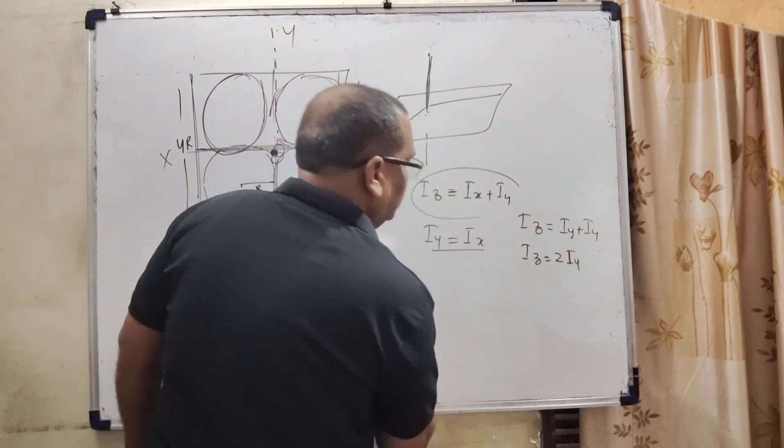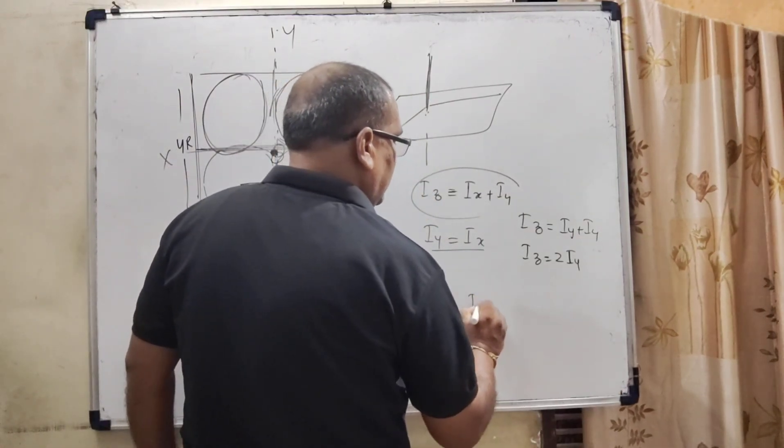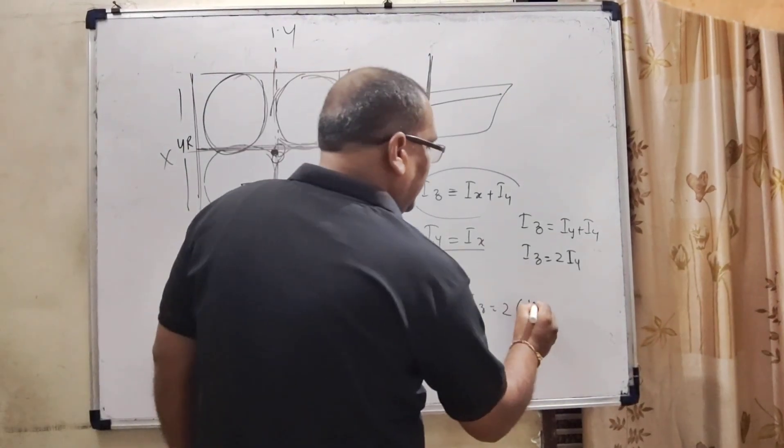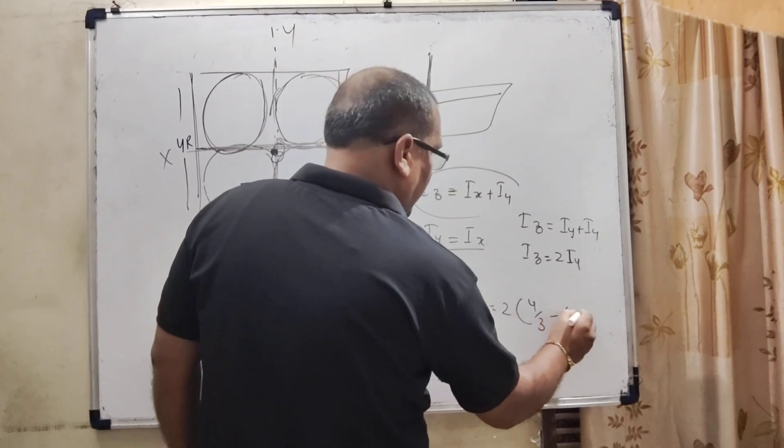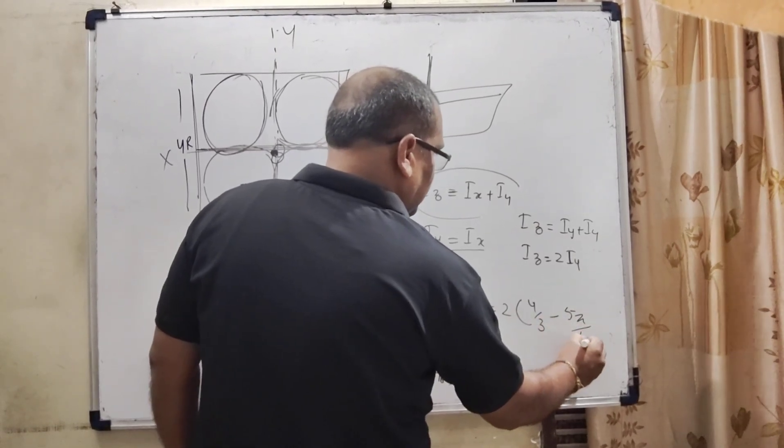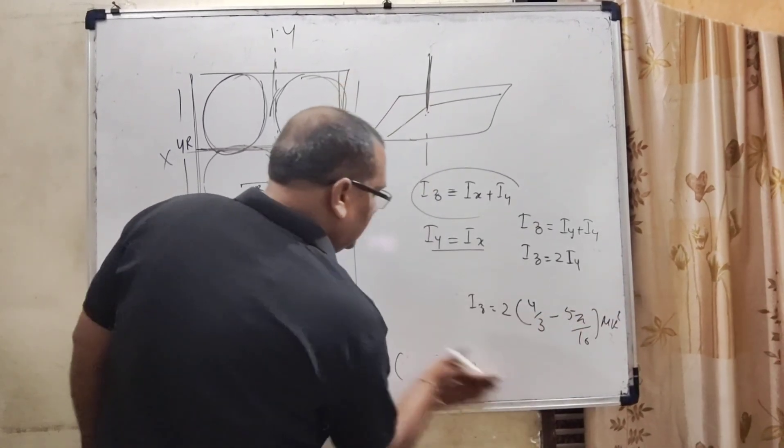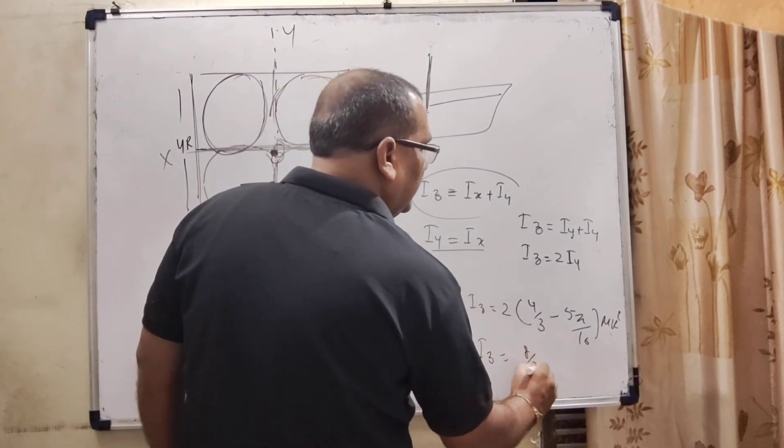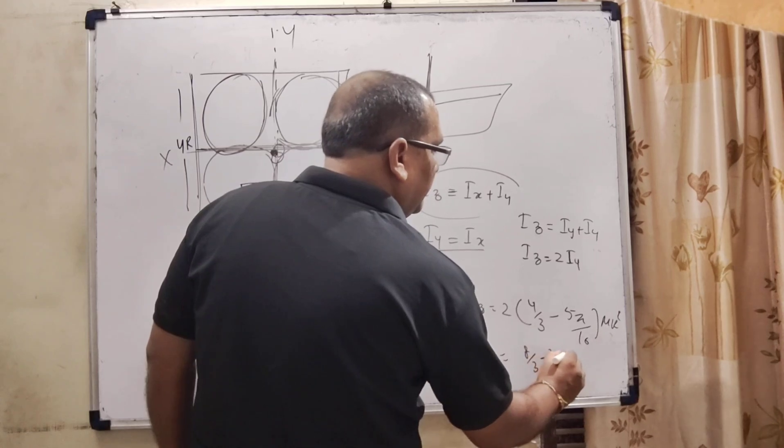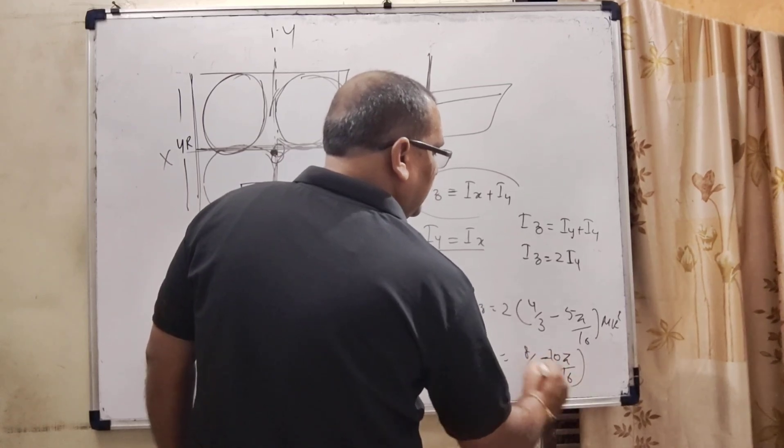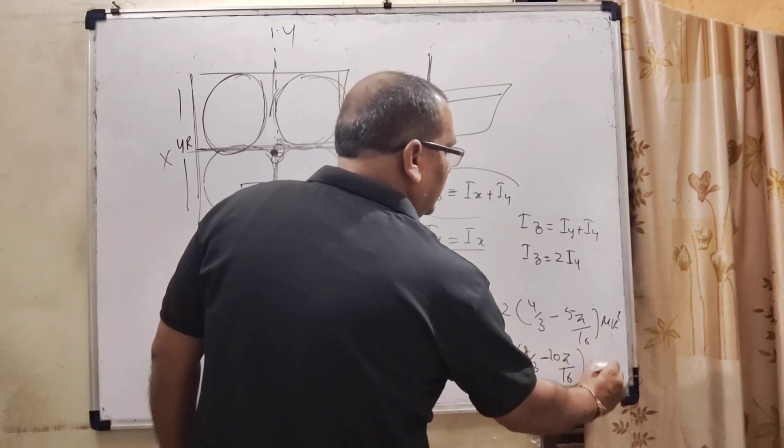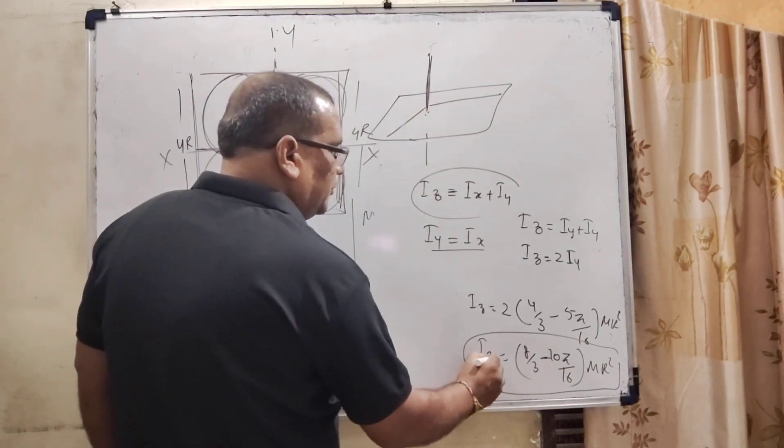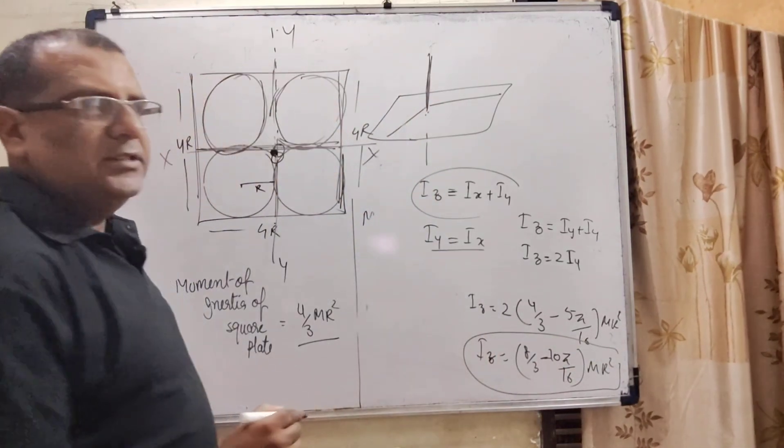2 times (4 by 3 minus 5 pi by 16) MR square. Iz equals 8 by 3 minus 10 pi by 16 MR square. That is the value of moment of inertia through the Z axis.